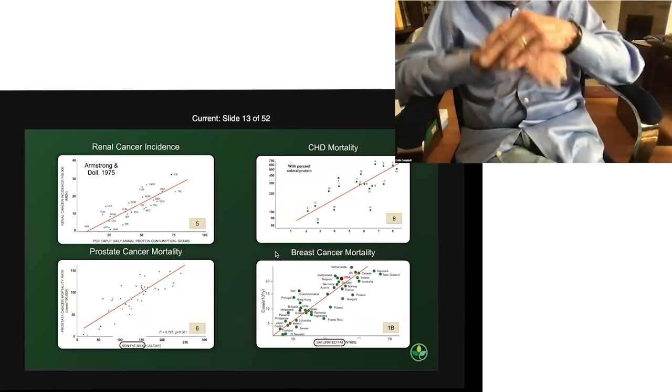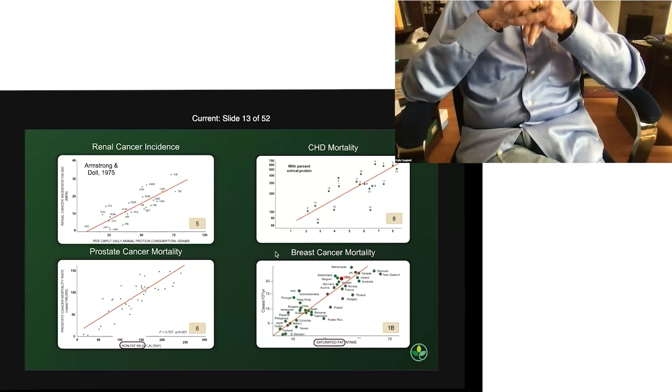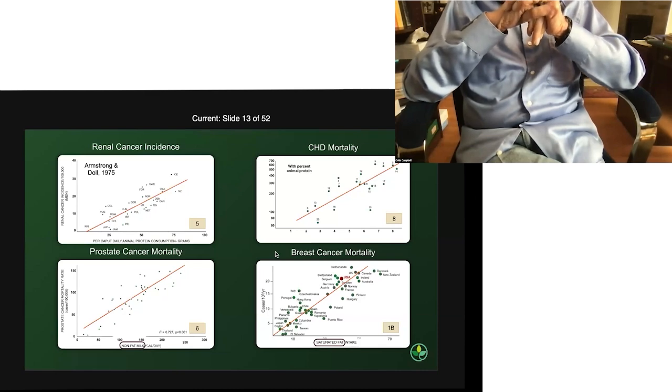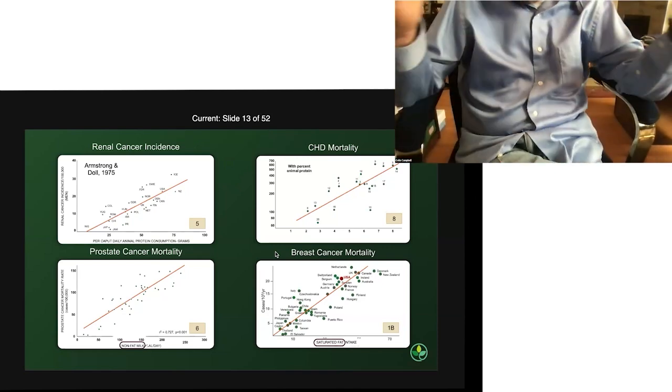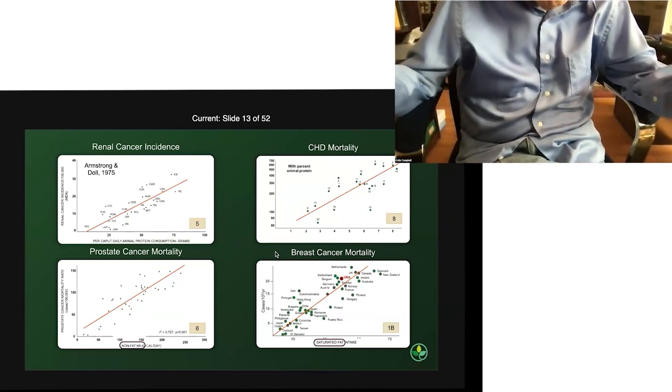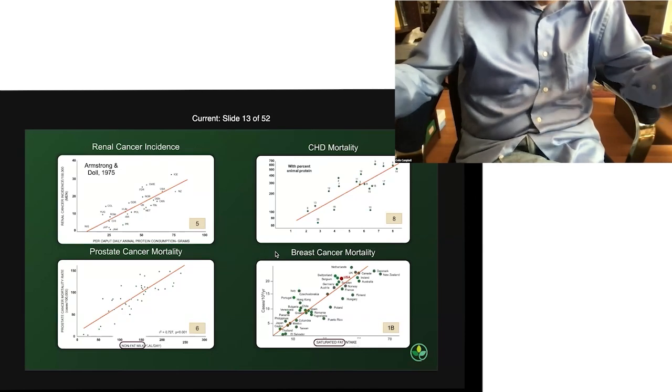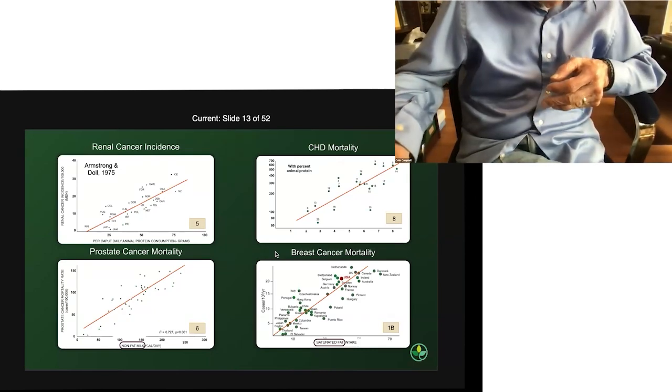Notice here the first four that I've got. The U.S. is near the top in these different cases. So we consume more saturated fat, which comes from animal food. It's a representation, an indicator of animal food, animal protein, more breast cancer mortality.